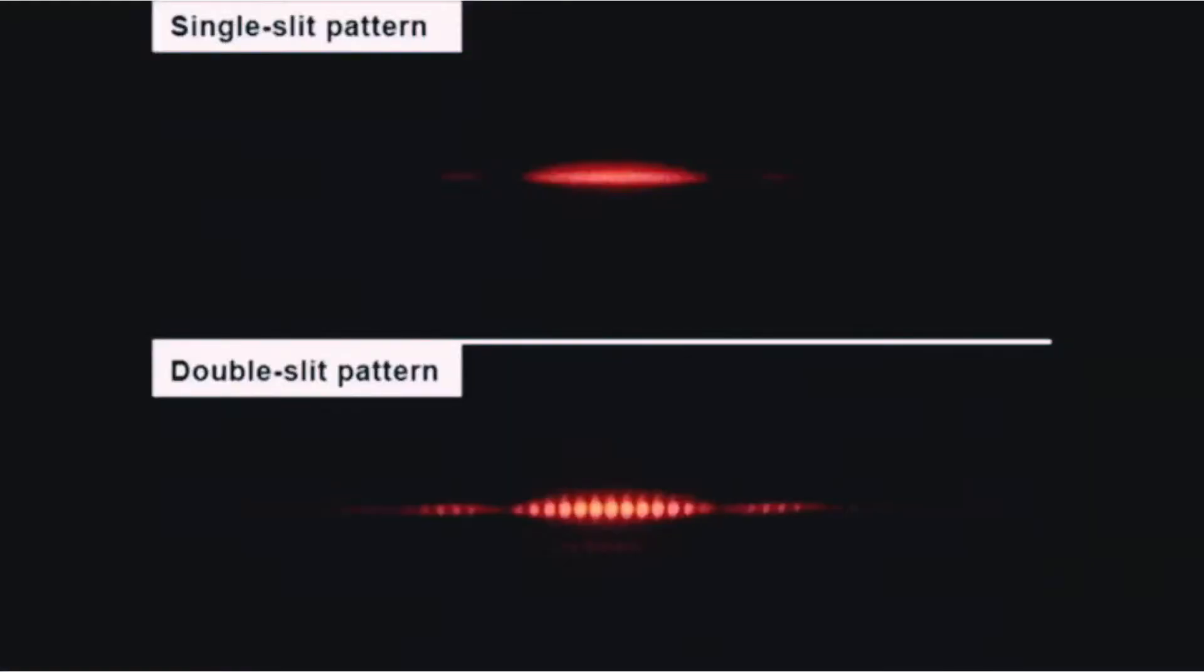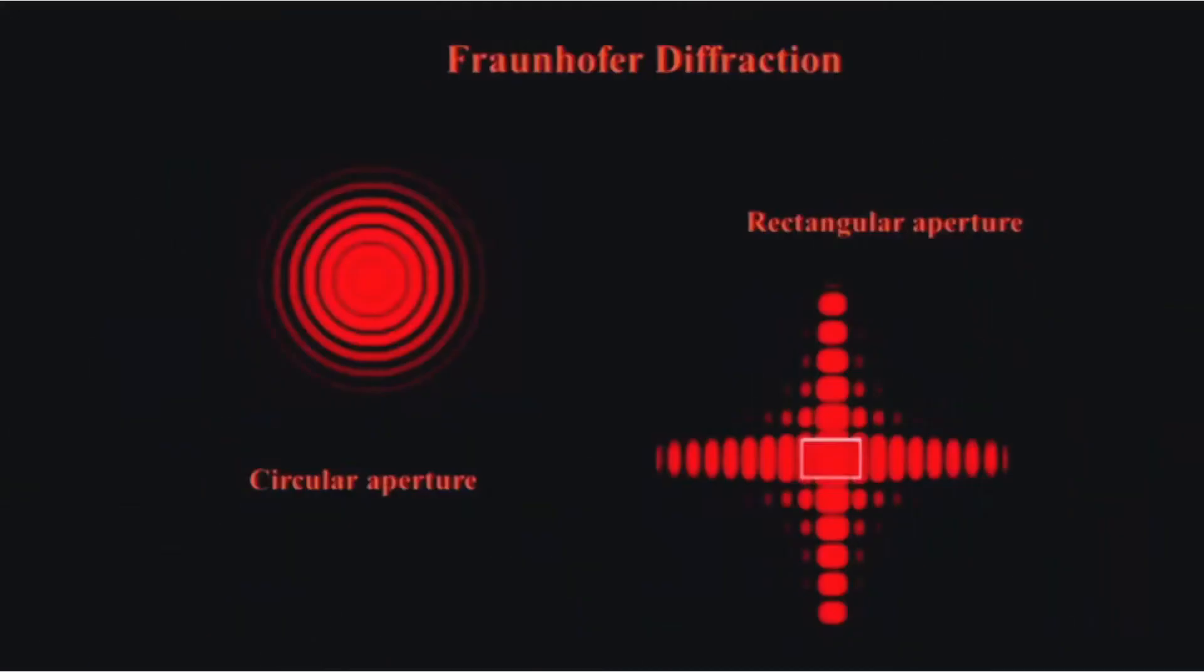You may have done it with light when you did Young's Slits Experiment and you may have seen a pattern like this. And you may recognize this picture as being the diffraction pattern that occurs when a wave travels through a circular opening or aperture.